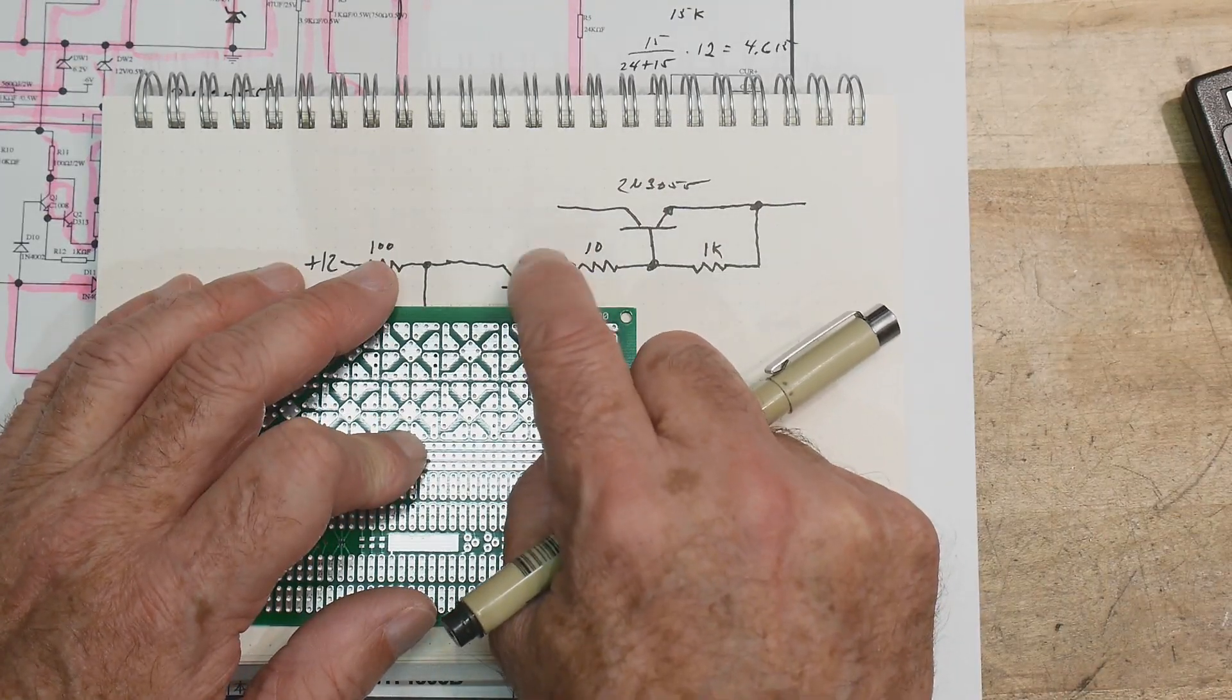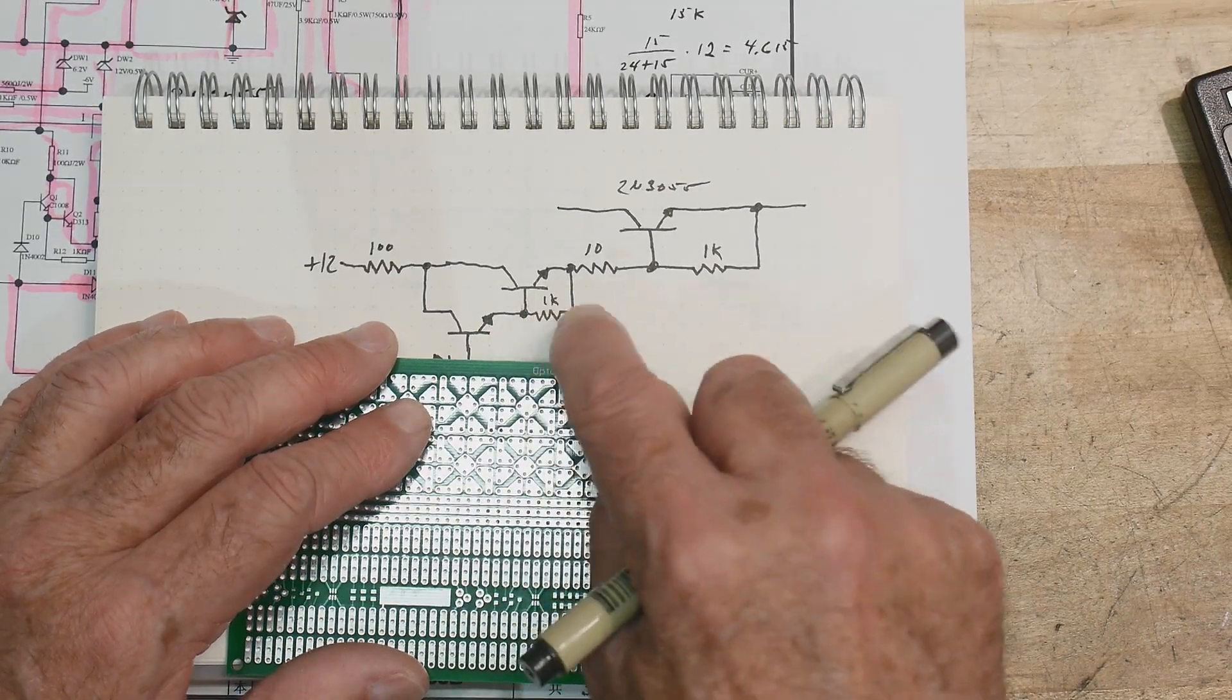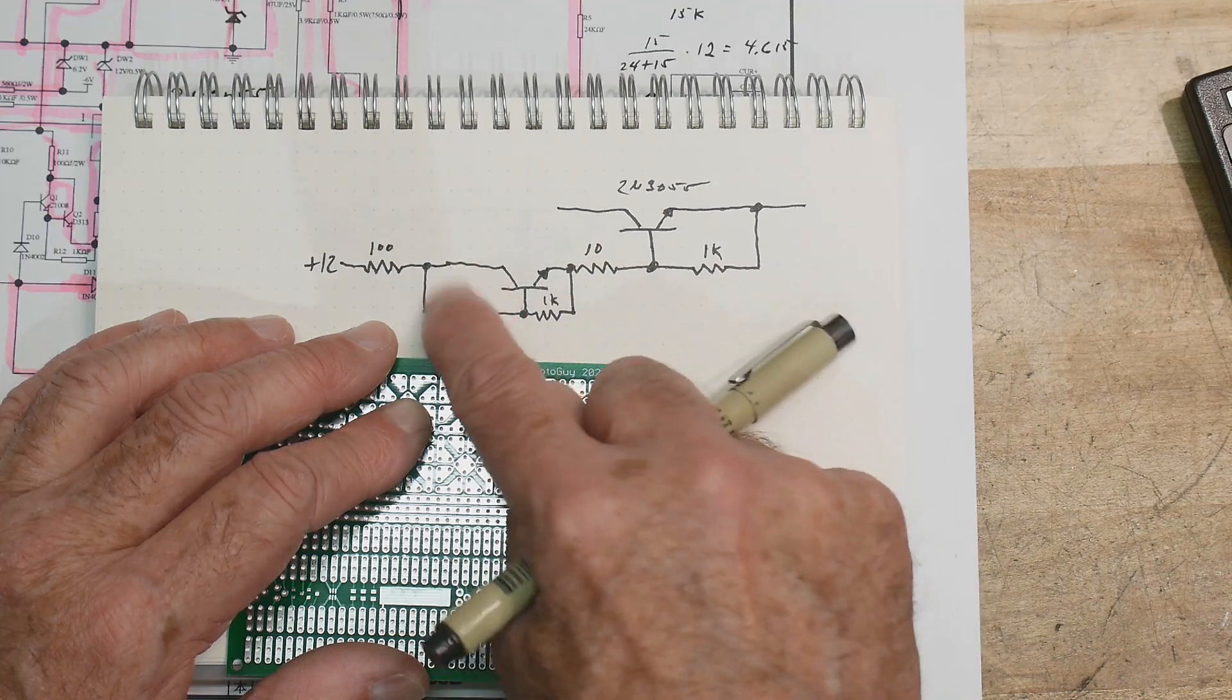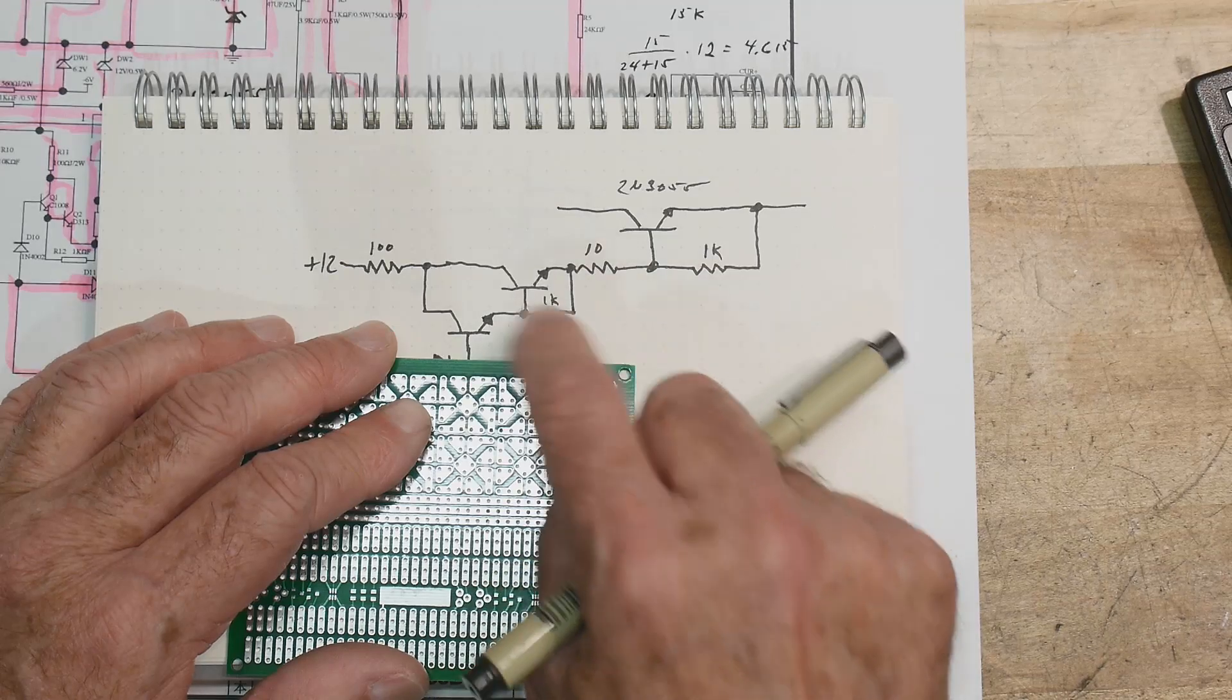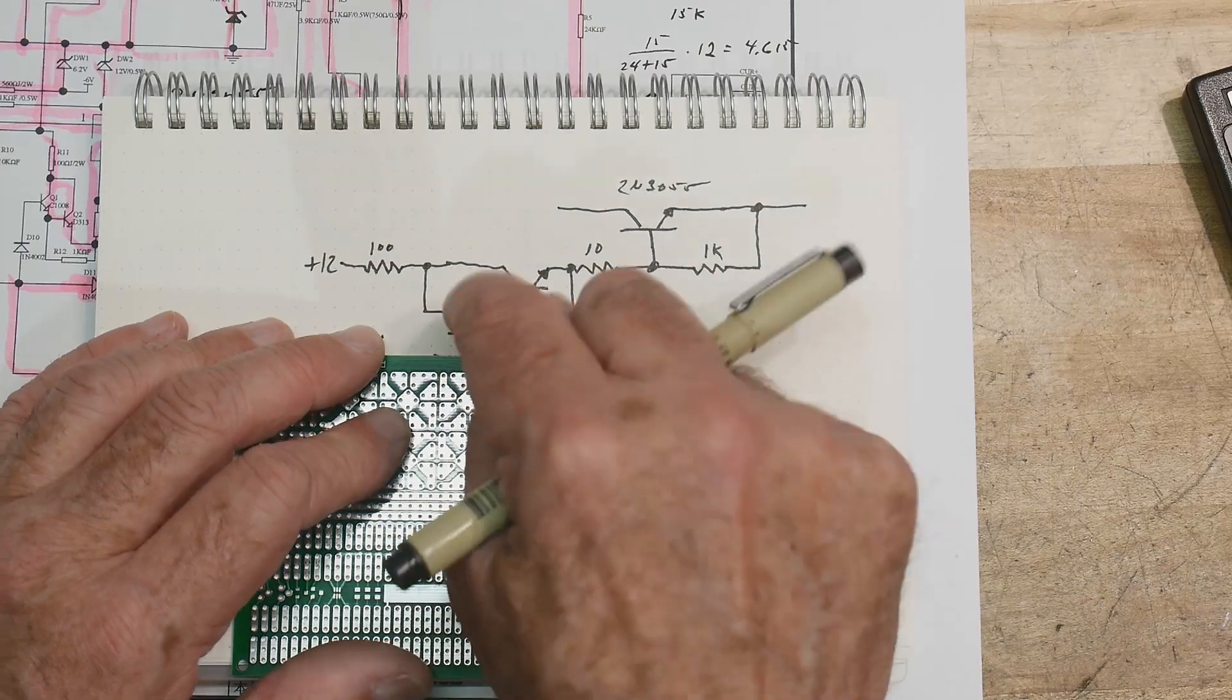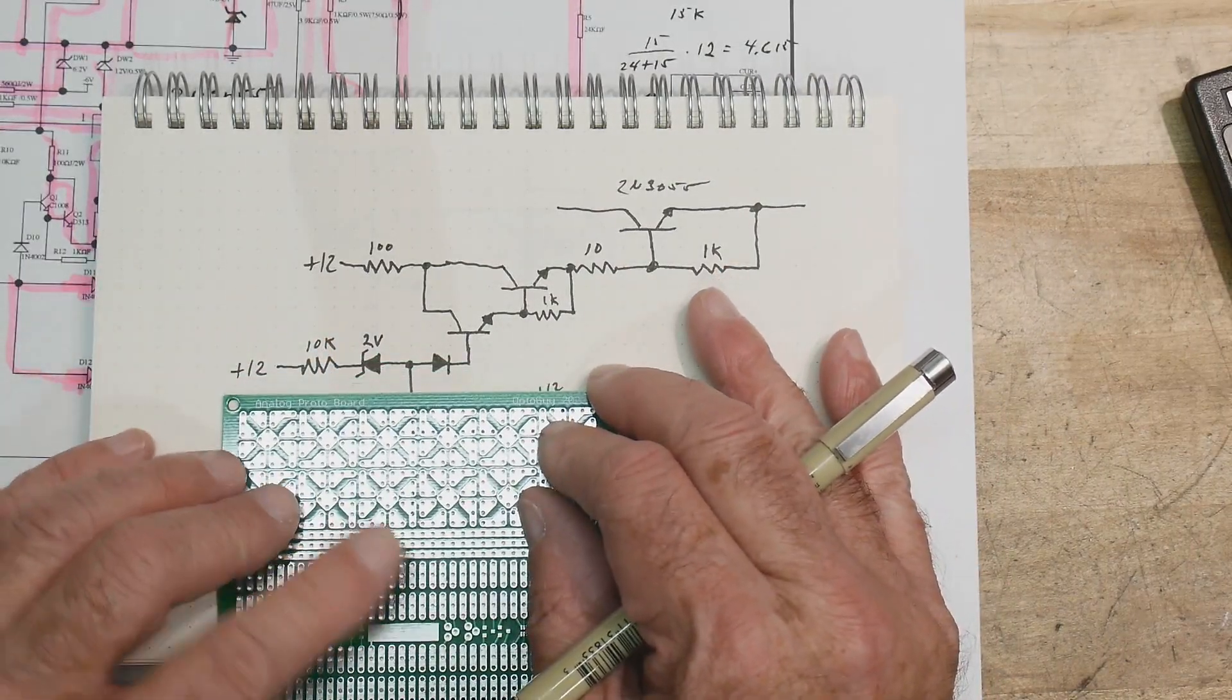So now we need to bias this transistor on, and we're going to do that with another transistor. So it looks the same. We have a 1K here to make sure this guy can turn off. And now this transistor can feed this in and turn this one on. And this looks like a Darlington pair. So that's what we have here. Now we need to turn this one on. So how do we turn that one on?